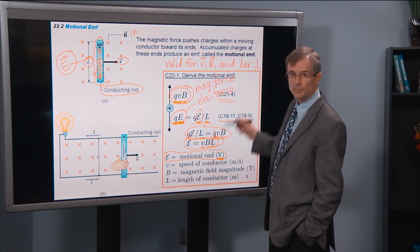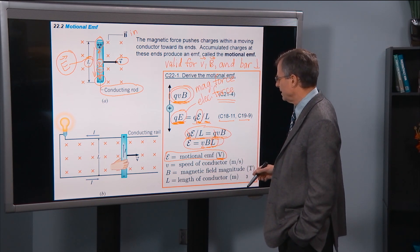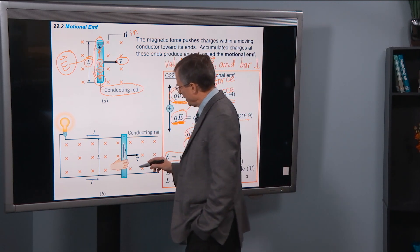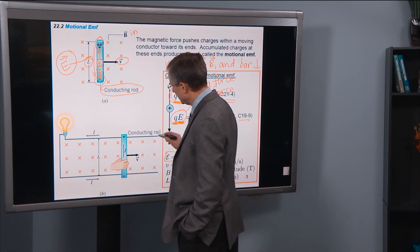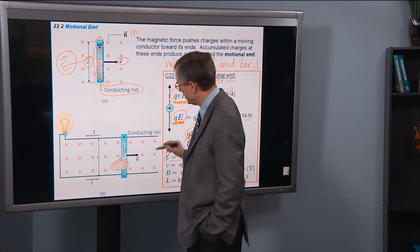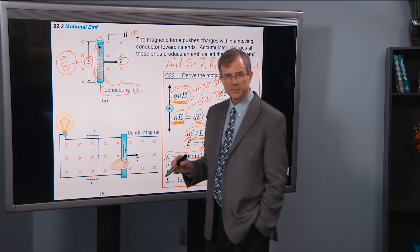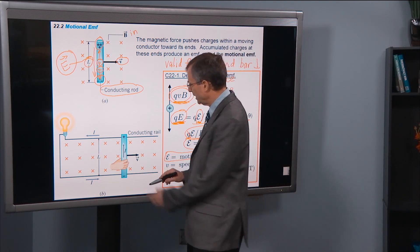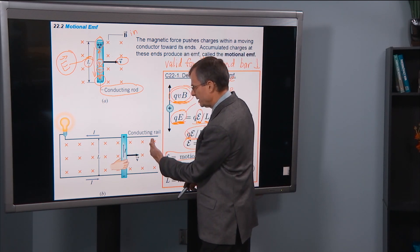So if you actually take this bar and put it along some conducting rails. So these black lines here and here are supposed to denote, say, wires or pieces of aluminum or something. And then you move this bar along it.